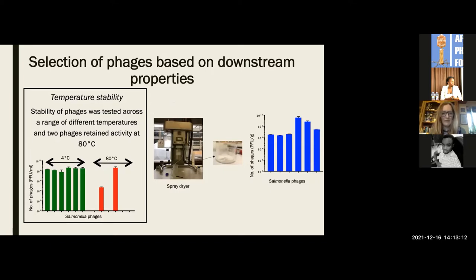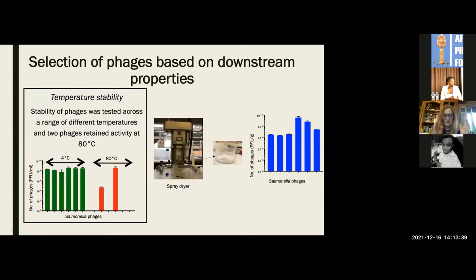One particular property we looked at was stability — specifically temperature stability. If you want to make a phage product to give to livestock, you probably need to process it, making a spray-dried powder for a stable product, and this process involves heat. We had six different phages that looked good in terms of host range. When held at 4°C for an hour, they're completely stable. But when held at 80°C, which is what we'd like for heat treatment, only two of them are stable. So we chose to work with those heat-stable phages.